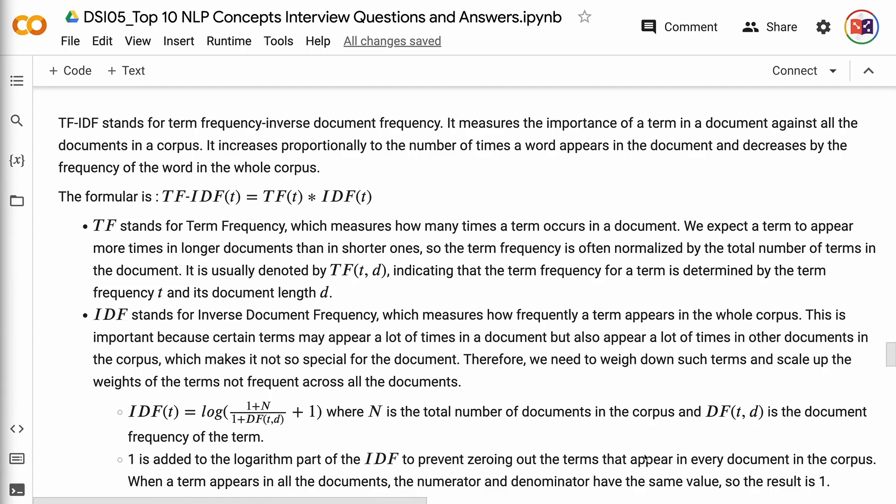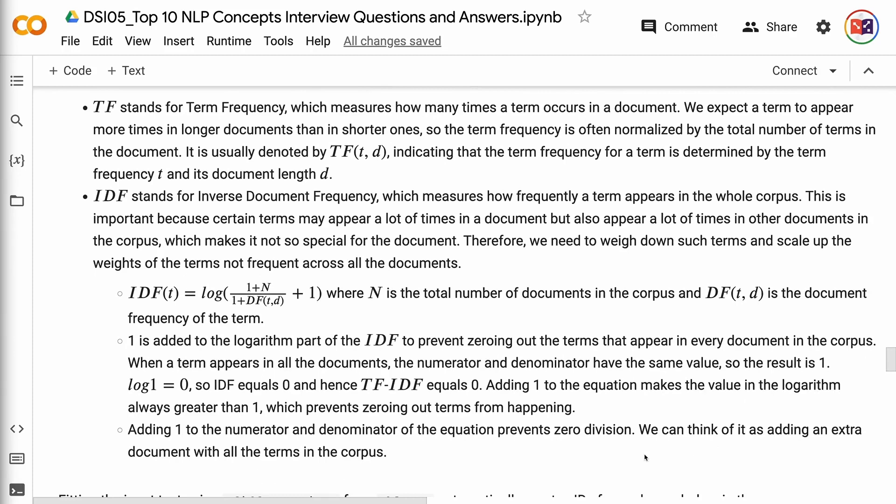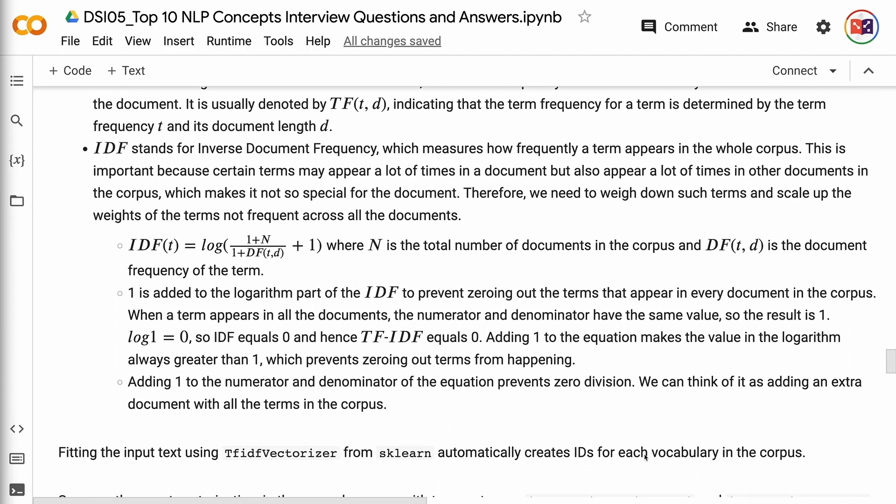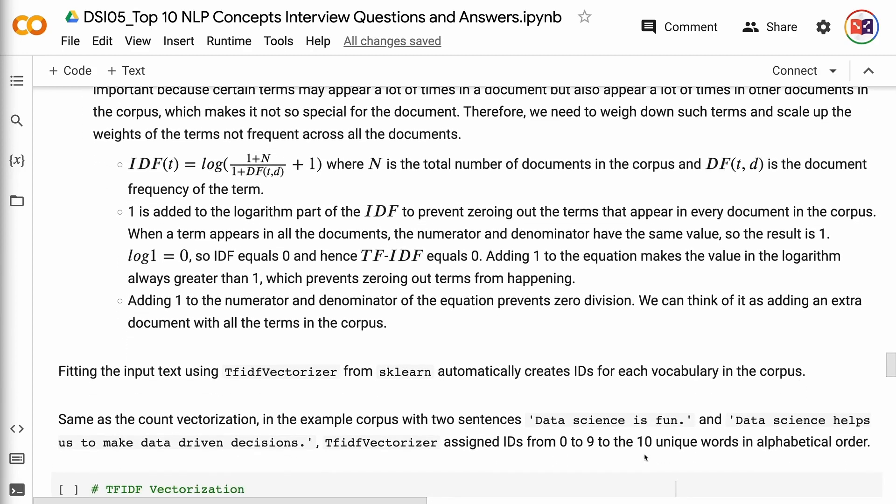IDF stands for inverse document frequency, which measures how frequently a term appears in the whole corpus. This is important because certain terms may appear a lot of times in a document but also appear a lot of times in other documents in the corpus, which makes it not so special for the document. Therefore, we need to weigh down such terms and scale up the weights of the terms not frequent across all the documents. In the IDF formula, N is the total number of documents in the corpus and DF(d) is the document frequency of the term. One is added to the logarithm part of the IDF to prevent zeroing out the terms that appear in every document in the corpus. When a term appears in all the documents, the numerator and denominator have the same value, so the result is 1. Log 1 equals 0, so IDF equals 0 and hence TF-IDF equals 0.